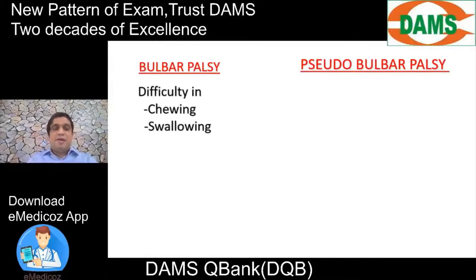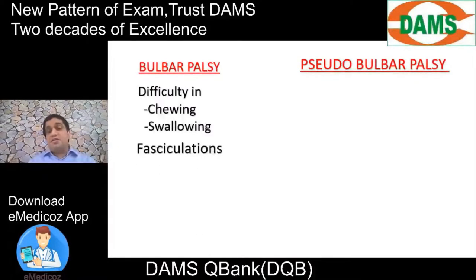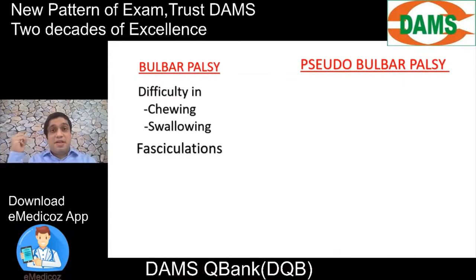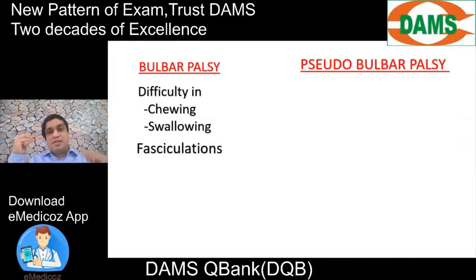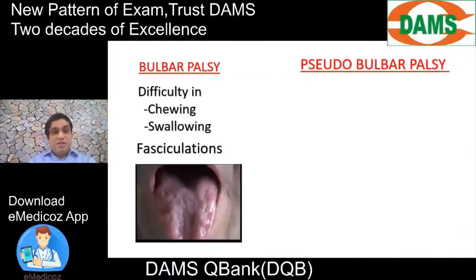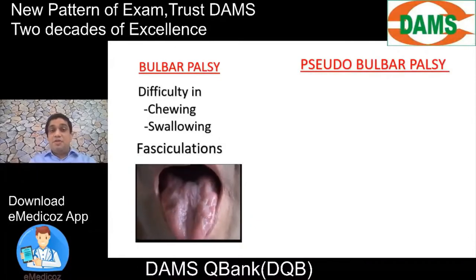Another difference: in bulbar palsy, fasciculations can occur. Fasciculations happen when the lesion is at the anterior horn cell level, but they can also occur when the lesion is at the cranial nerve nucleus — the brainstem equivalent. So fasciculations of the tongue muscles can be seen in patients of bulbar palsy.